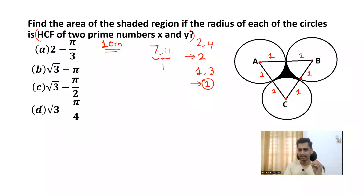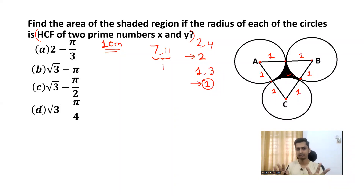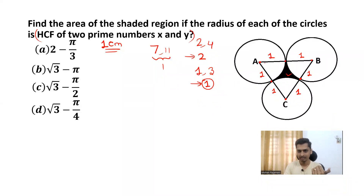You want to find the area of the black shaded region. Before that, note that the sum of interior angles of a triangle is always 180 degrees — whether it is an isosceles triangle or an equilateral triangle. This is an equilateral triangle, so all angles are equal: 180 divided by 3 gives 60 degrees. So each angle is 60 degrees.